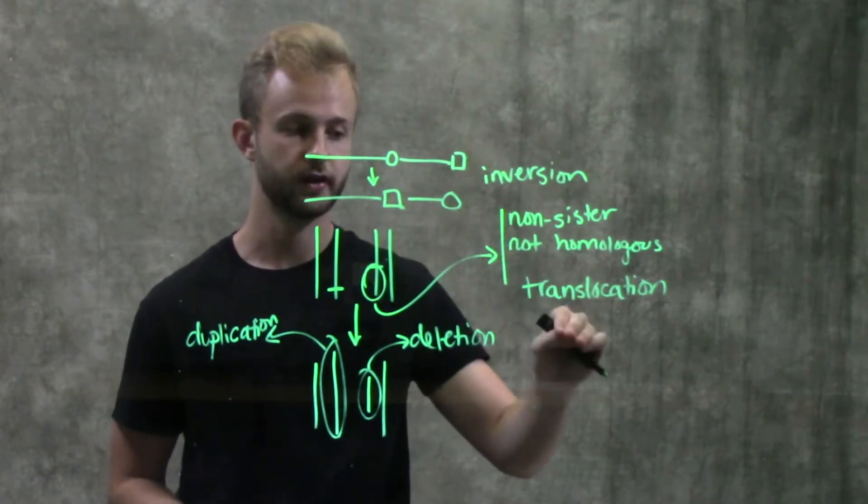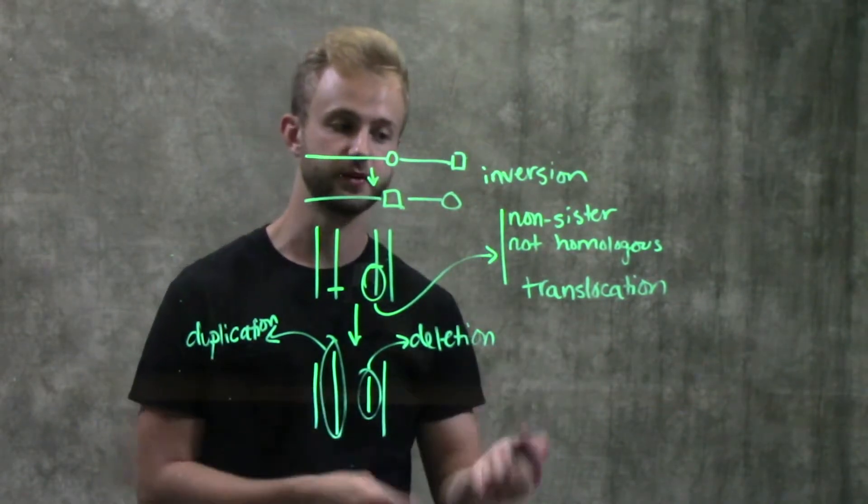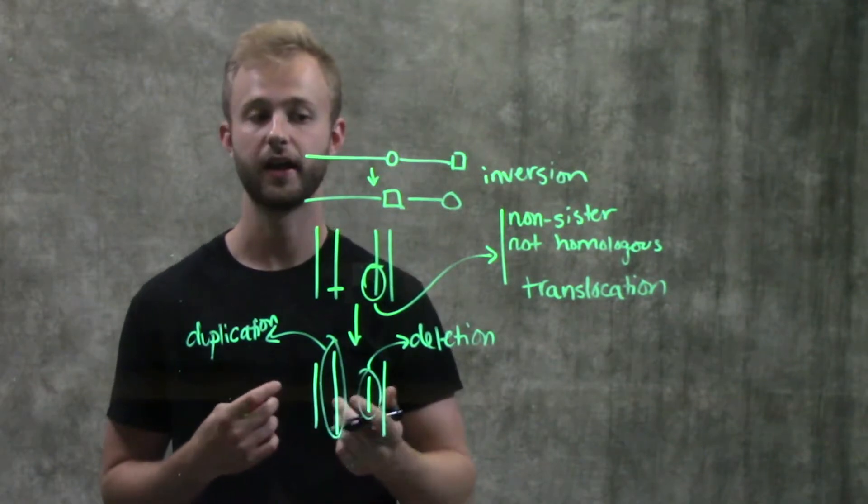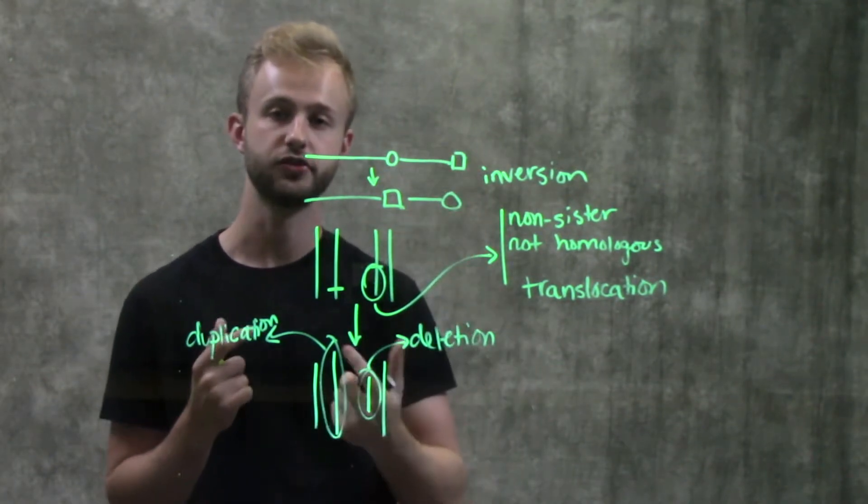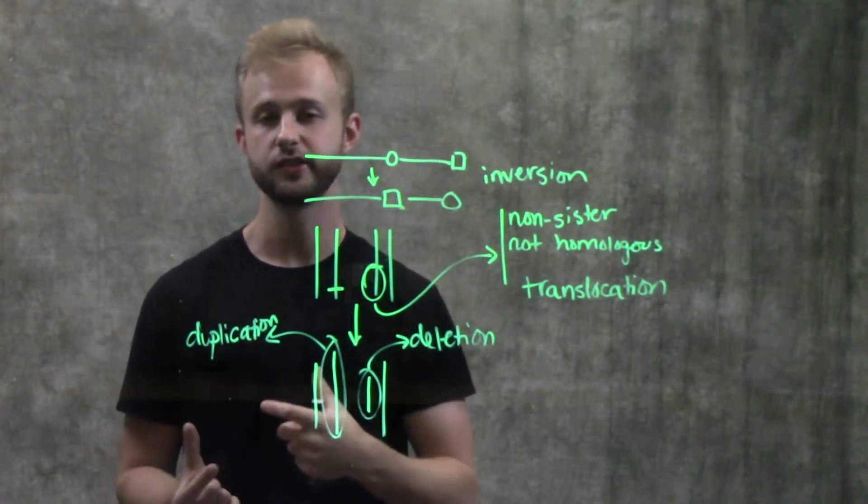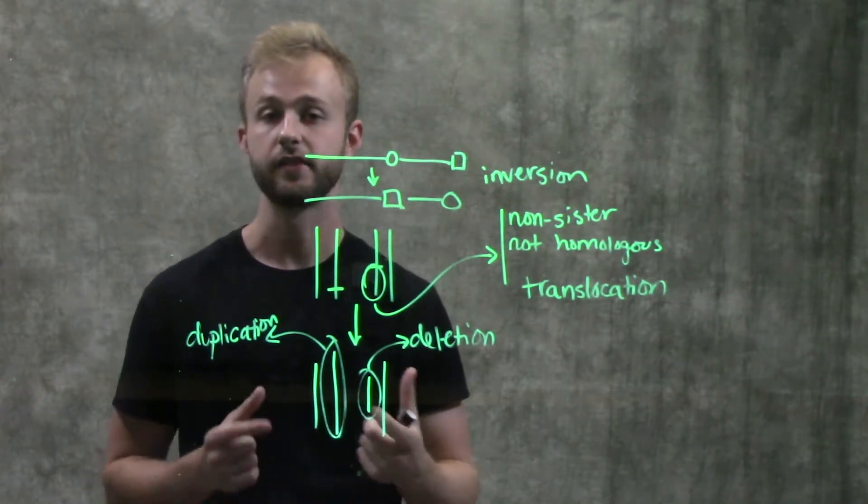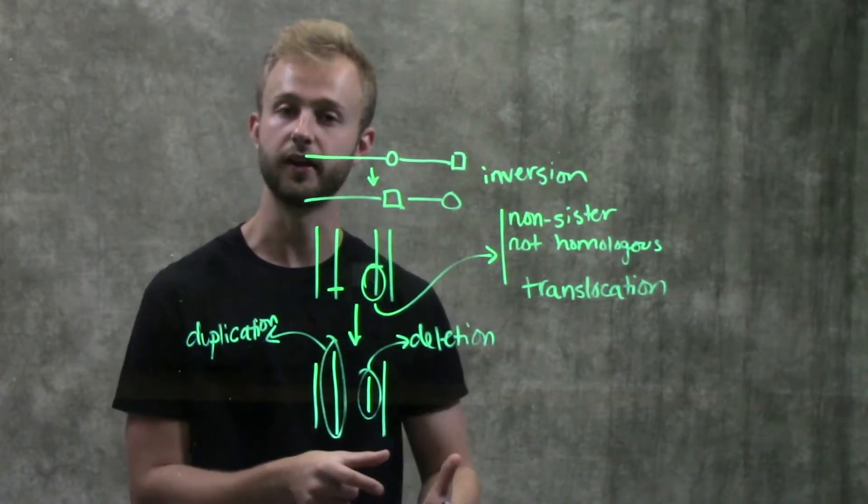With inversions and translocations specifically we also have another problem that even though they still have these genes, the locations of these genes have changed and that can influence the way that they're expressed.